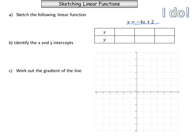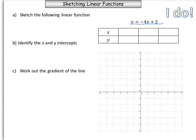We'll make a table of values, choosing x values within our number plane: negative 1, zero, and positive 1. Substituting those values into the equation: y equals negative 4 times negative 1 plus 2, which gives us 4 plus 2 equals 6. So our first point is (negative 1, 6). Going to our x value of negative 1 and y value of 6, we plot that there.